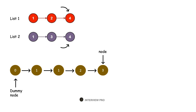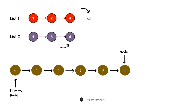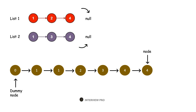We move the pointer in list 2 to the next node. Now we have values 4 and 4, so we take the node from list 1, add it to our dummy list, and update the pointer. Since we added node 4, we move the pointer to the next node. Now there are no more nodes left in list 1, so the pointer points to null. In such a case, we simply add all remaining nodes from list 2 — which is node 4 — to our dummy list. Once list 2 also points to null, we stop and return dummy node dot next as our output.